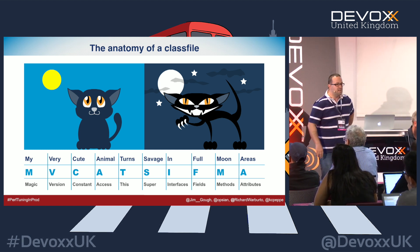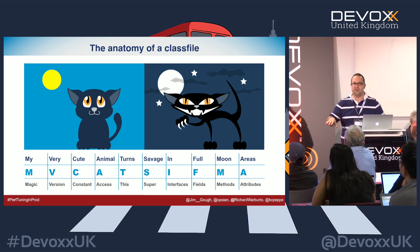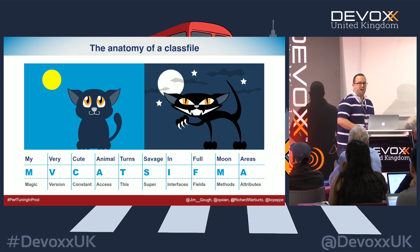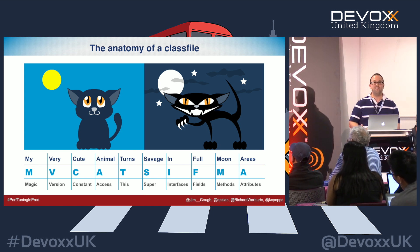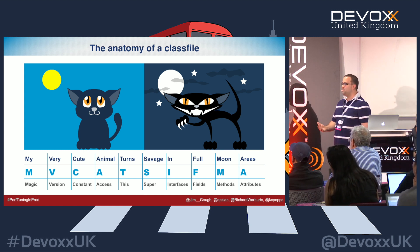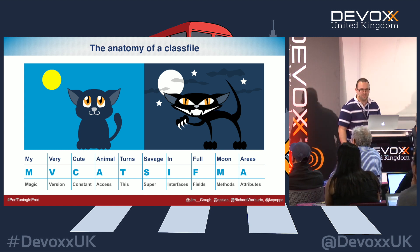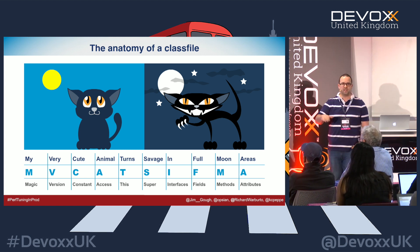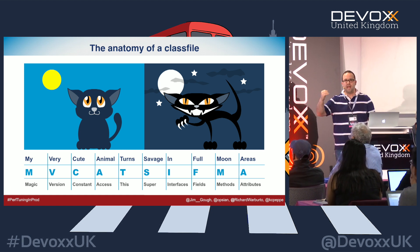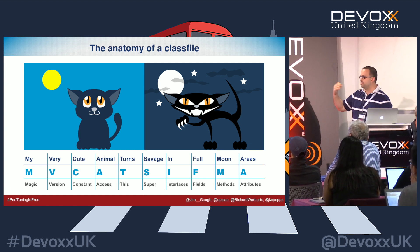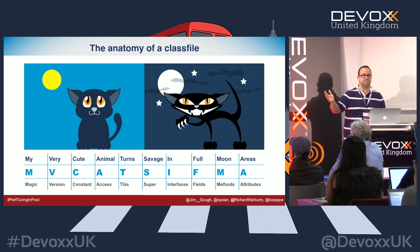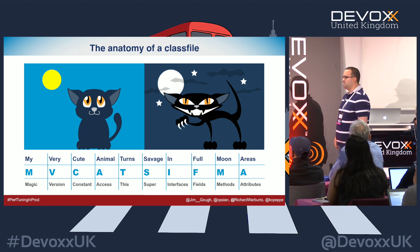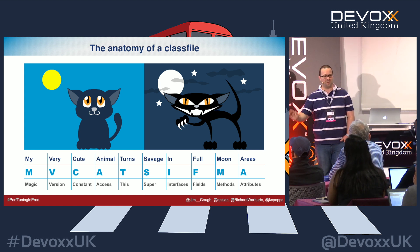The anatomy of a class file: this is one of Ben Evans' mnemonics — 'my very cute animals turned savage in full moon areas' — which stands for magic, version, constant, access, this, super, interface, fields, methods, and attributes. That describes the general layout. Every Java class has a magic number at the top: 0xCAFEBABE, originally from Cafe Dead — there's a whole Stack Overflow story about that.